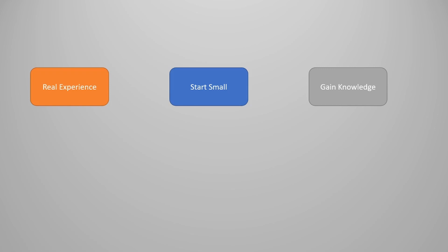I am not going to tell you to go to VulnHub, download a virtual machine and practice on it, or create a keylogger. These are suggestions given to newcomers in cyber security all the time, and you might have already heard about them. Although both suggestions are really good, and you must try them if you haven't already. My favorite virtual machines on VulnHub are Metasploitable and Mr. Robot. I'll provide links to both in the description.